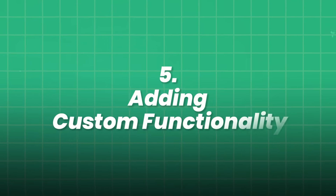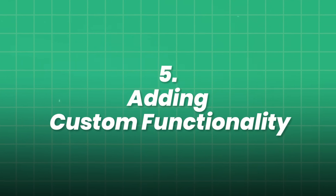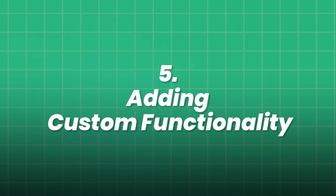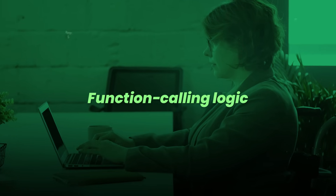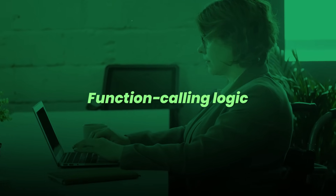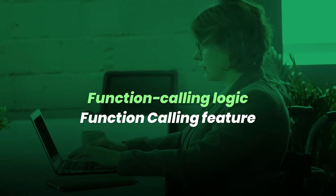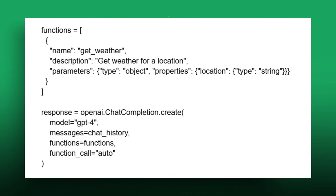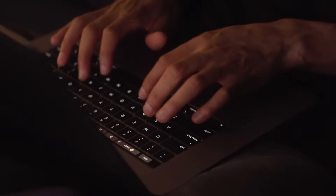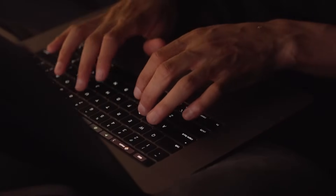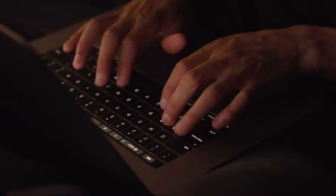Step 5: Adding custom functionality. You can inject function-calling logic using OpenAI's function calling feature. GPT-4 will detect the intent, call the right function, and blend the results into its reply. You now have a chatbot that can execute commands, not just chat.